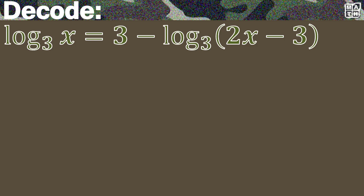When we add logarithm of 2x minus 3 to the base of 3, we'll have the logarithm of x to the base of 3 added to the logarithm of the entire 2x minus 3 to the base of 3. The right-hand side will just be 3 because the minus logarithm of 2x minus 3 to the base of 3 will become 0. Since the logarithms are now on one side and their bases are the same, we can now combine them into one expression.